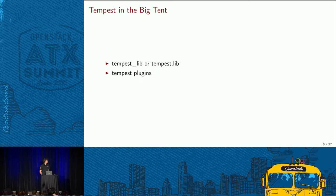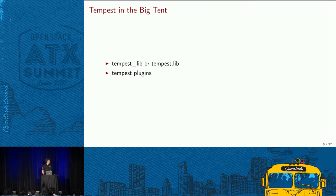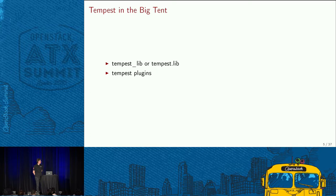The first initiative we started was Tempest Lib — initially Tempest underscore Lib. The idea was to create a stable interface within Tempest, a part we guarantee is backward compatible, that other projects can consume to create their own tests. However, the Tempest namespace was taken on PyPI, so Tempest Lib as a separate repo was born. Recently Matt managed to get the Tempest namespace back since the other project is no longer active, so we moved back to a namespace within the Tempest repo.